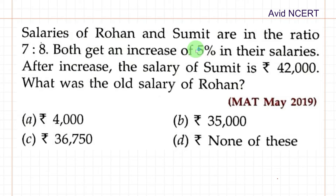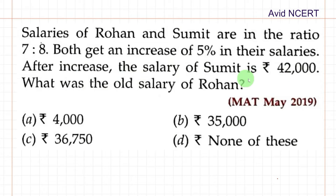Salaries of Rohan and Sumit are in the ratio 7 is to 8. Both get an increase of 5% in their salaries. After the increase, the salary of Sumit is 42,000. What was the old salary of Rohan?